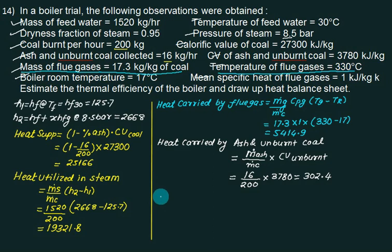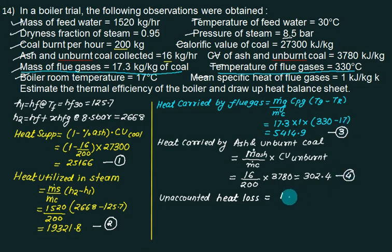Unaccounted heat loss equals heat input minus the sum of items 2, 3, and 4. So this is item 1, this one is 2, this one is 3, and this one is 4. Calculate: 1 minus (2 plus 3 plus 4). I suppose this is a better sheet than the previous one. The efficiency answer is 76.31%.